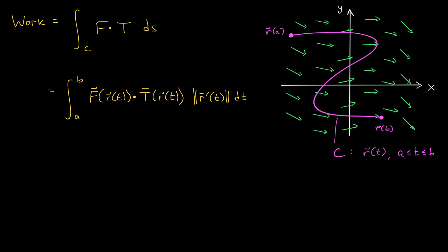But wait a second. Capital T is the unit tangent vector to our curve, and if you think way back to our lessons on parametric equations, you may remember that the tangent vector to the curve is given by the derivative of R(t). So T is R'(t), but we have to divide by its norm to make it a unit vector: R'(t) over the norm of R'(t). At this point you can see there's going to be some cancellation. We're simply left with the integral from a to b of F(R(t)) dot R'(t) dt.